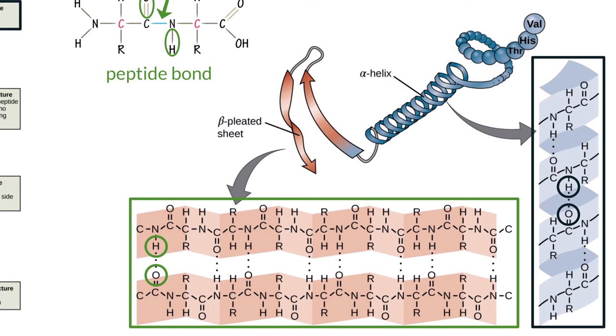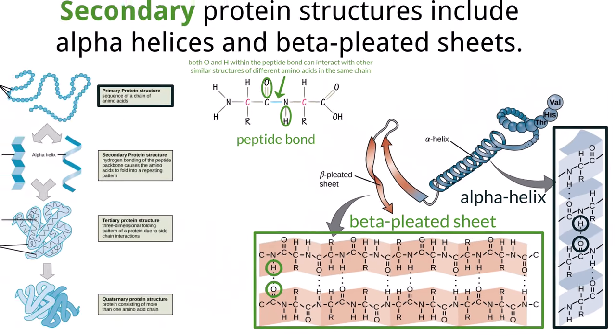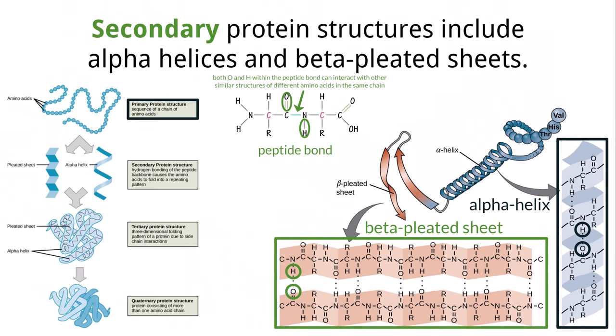Two common structures created from these hydrogen bonds are the alpha helix and the beta pleated sheet. Both of these involve different orientations of those hydrogen bonds between the atoms of the base amino acid molecule. This is commonly the first type of folding that occurs after the primary structure of the protein is built, which is why we call it the secondary structure.